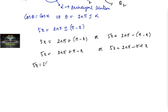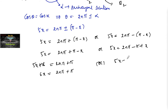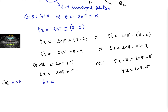From the first case: 5x + x = 6x = 2nπ + π. For n = 0, we have 6x = π, which implies x = π/6. Since π/6 belongs to (0, π/2), this is a valid solution.